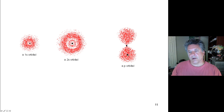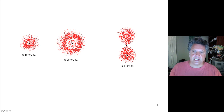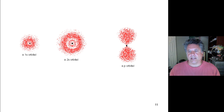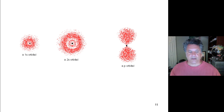You might ask how an electron in a p orbital gets from one lobe to the other if the probability of finding it at the nucleus is zero. For that you have to study quantum physics and the wave nature of electrons — and that's beyond the scope of this course.